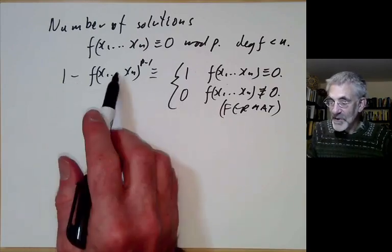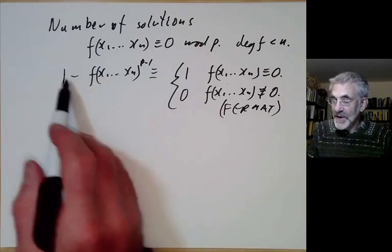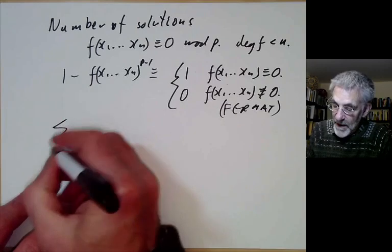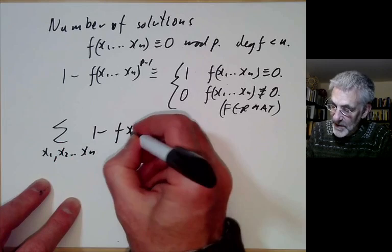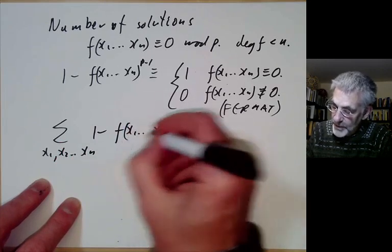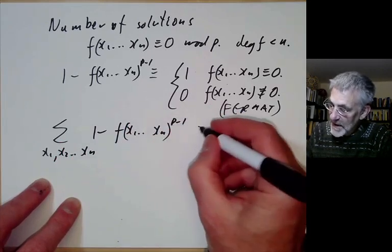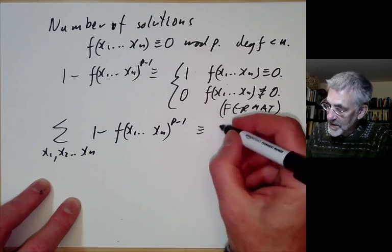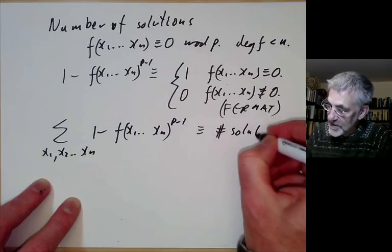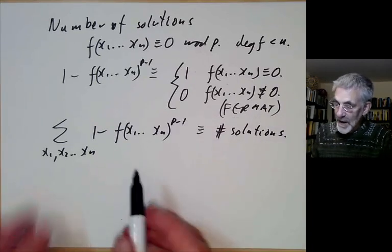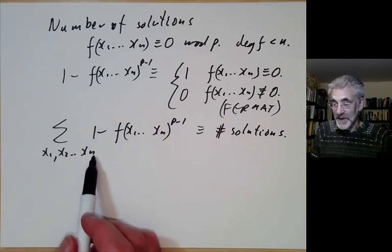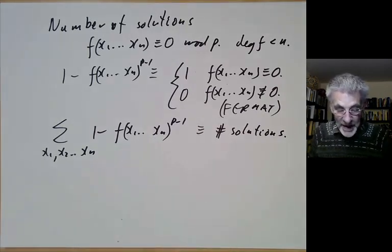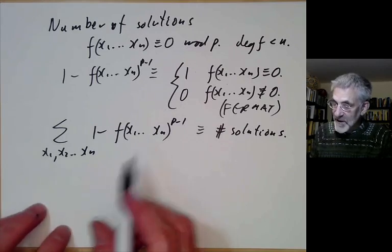So we can now count up the number of solutions by just adding up this over all x1, x2 up to xn. So we take this huge sum. And this is equal or congruent mod p to the number of solutions. Because this expression is just 1 whenever x1 up to xn is a solution and 0 otherwise.